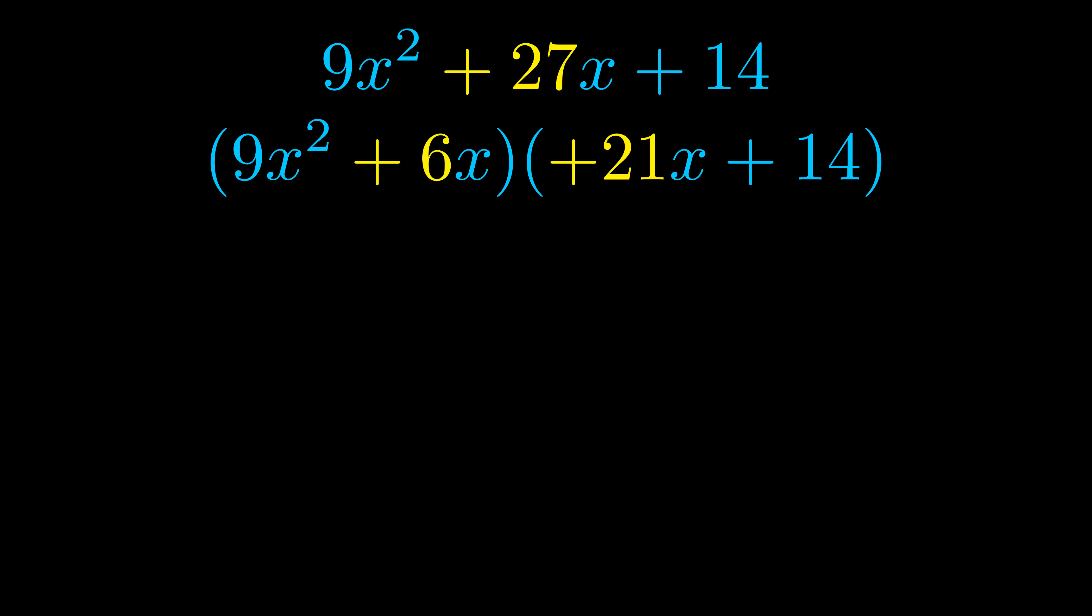Once we've done this we go ahead and we put parentheses around the first term and the last term and we do that so that we can take the greatest common factor out of both terms. We can see the greatest common factor is now outside in green.